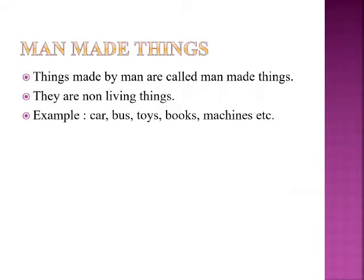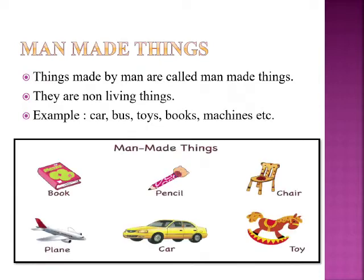The next topic is man-made things. Things made by man are called man-made things. They are non-living things. Examples: car, bus, toys, books, machines, etc., as shown in the picture. These man-made things are all non-living things.